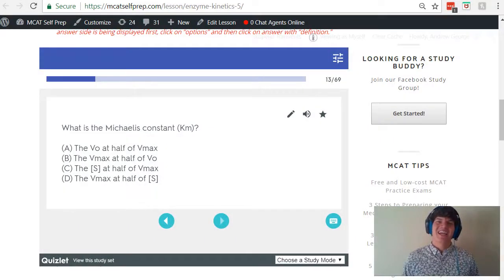If we take a second look at the answer choices, you'll see that answer choice C is the correct answer, as the Michaelis constant is the substrate concentration at half of Vmax.